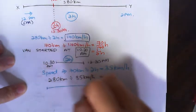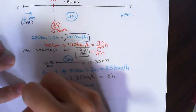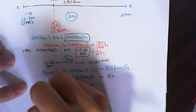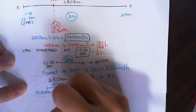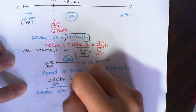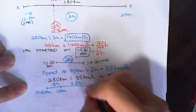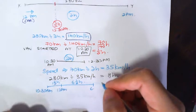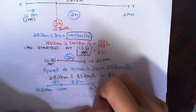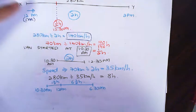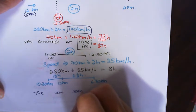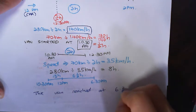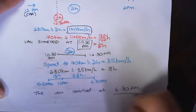10:30 a.m., he started off. One and a half hours later is 12 p.m., so I have another six and a half hours to go. Calculating this, this will be 6:30 p.m. So the van reached at 6:30 p.m. That's your answer.